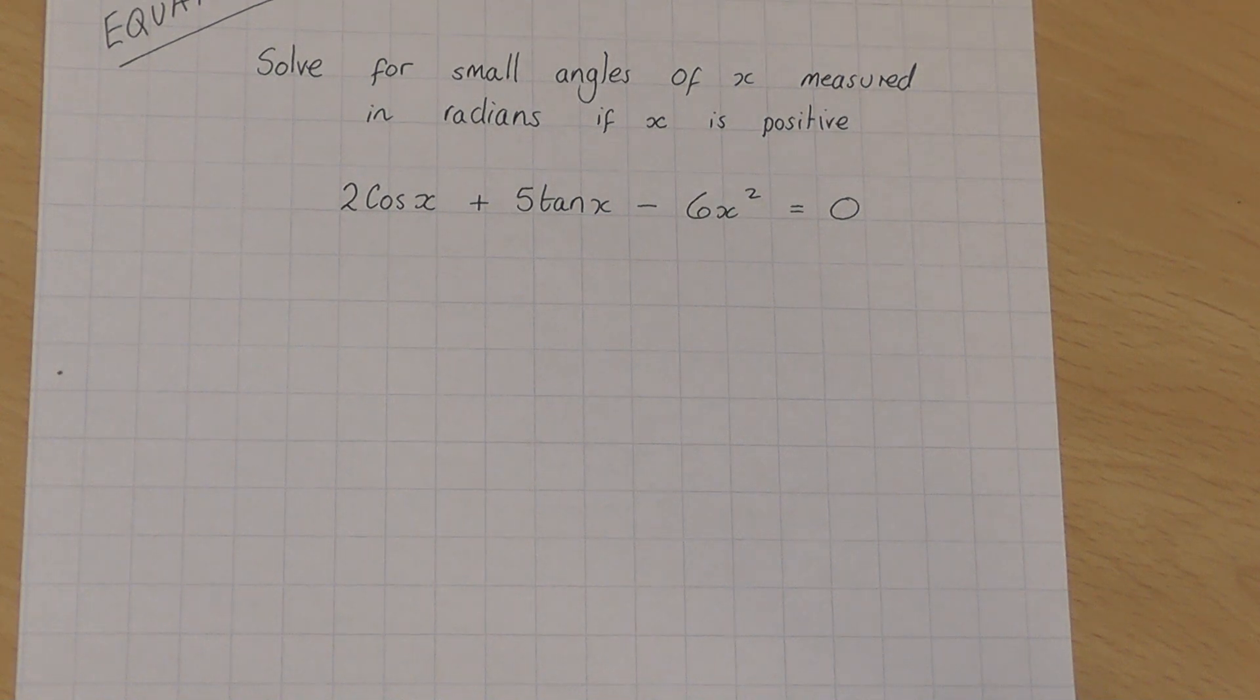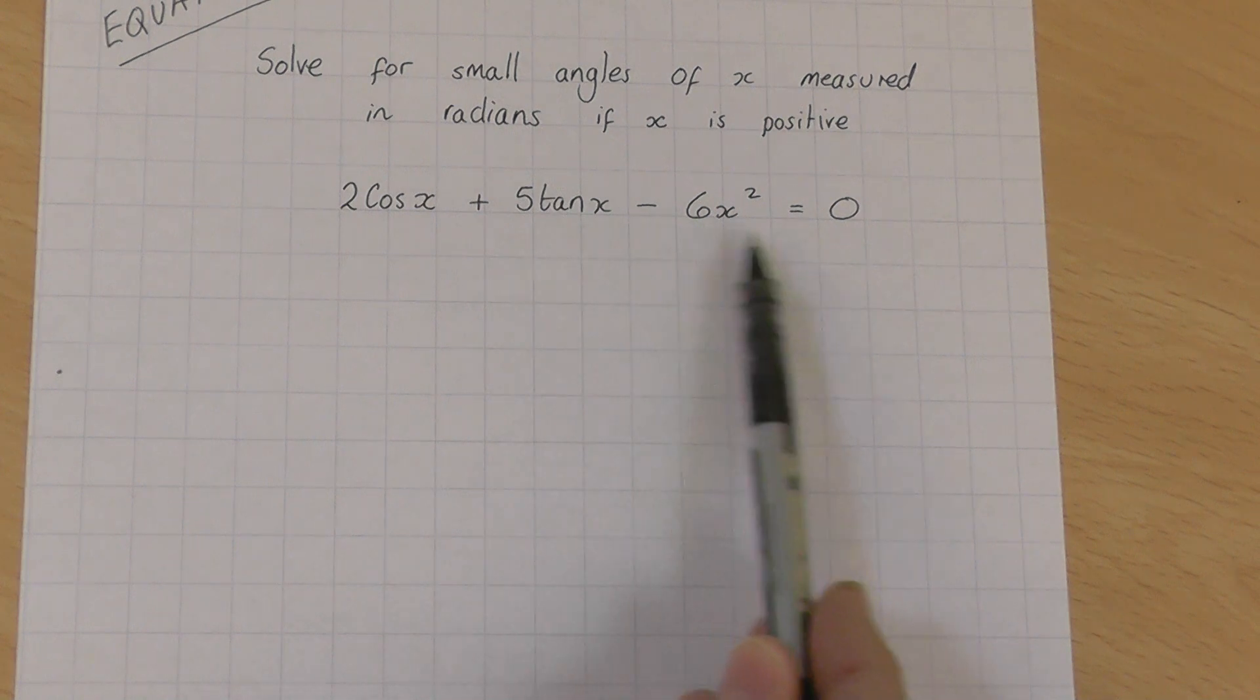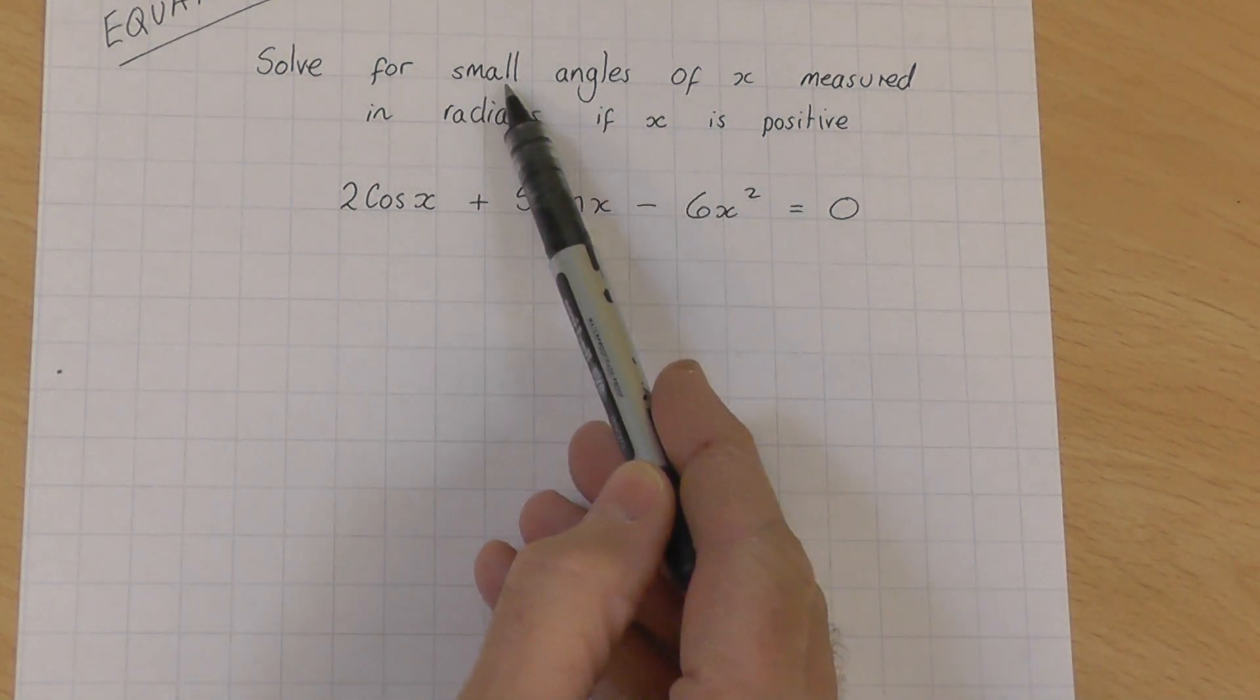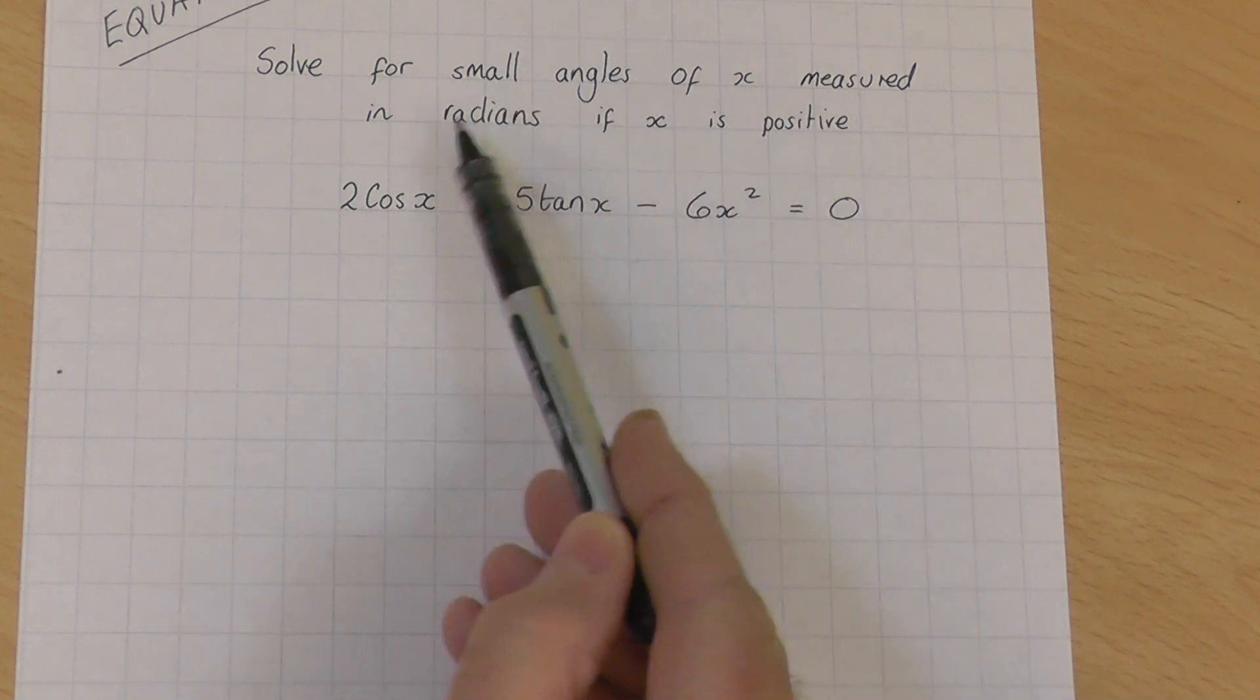Sometimes you'll be asked to solve equations such as the one I've outlined here: 2cos x plus 5tan x minus 6x squared equals 0.